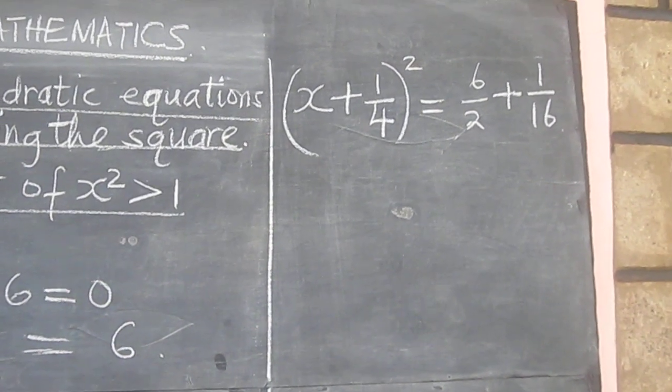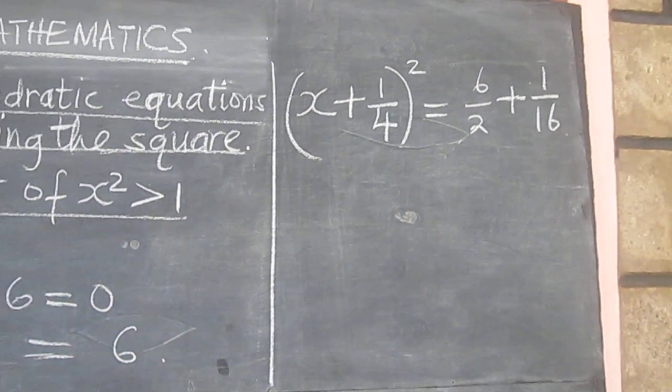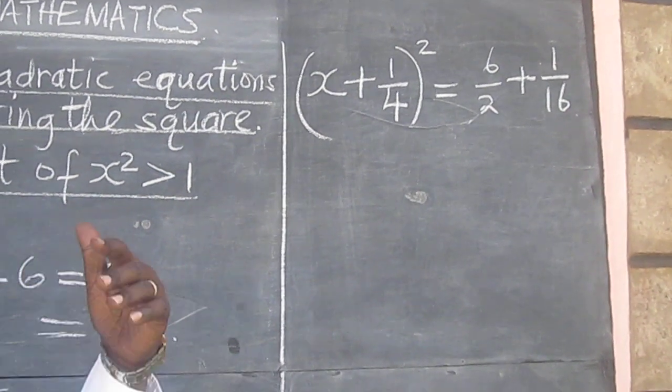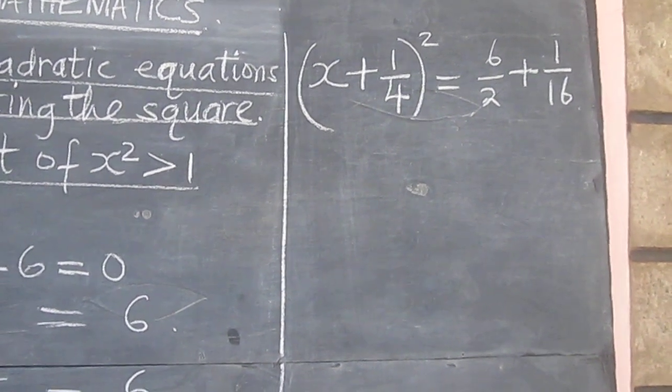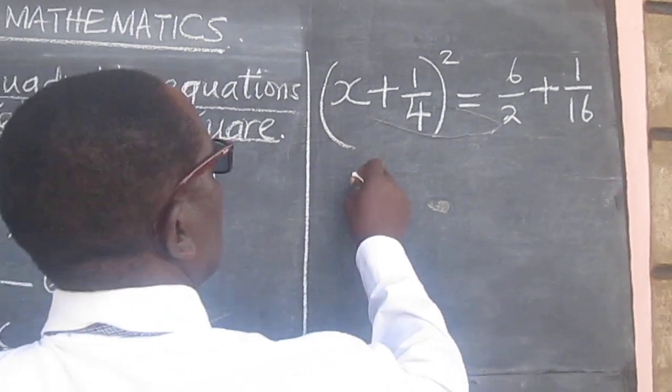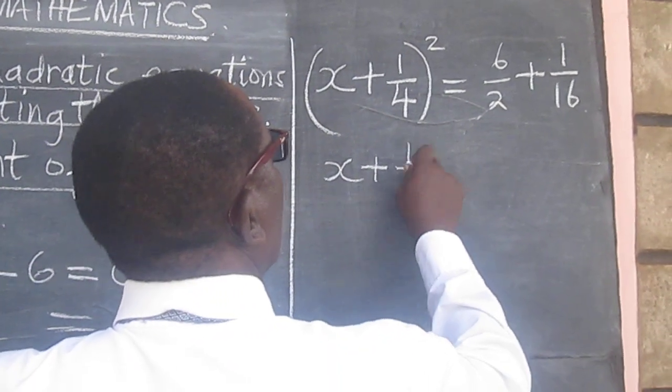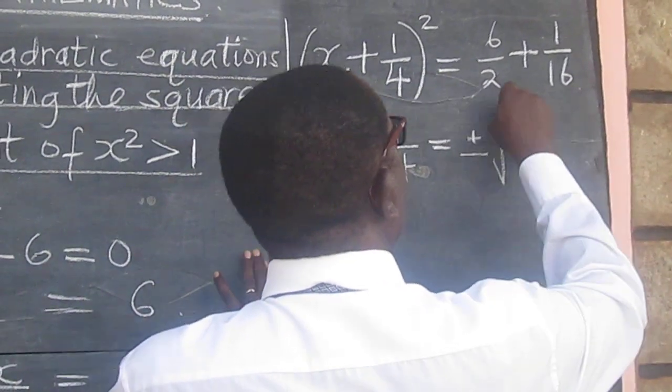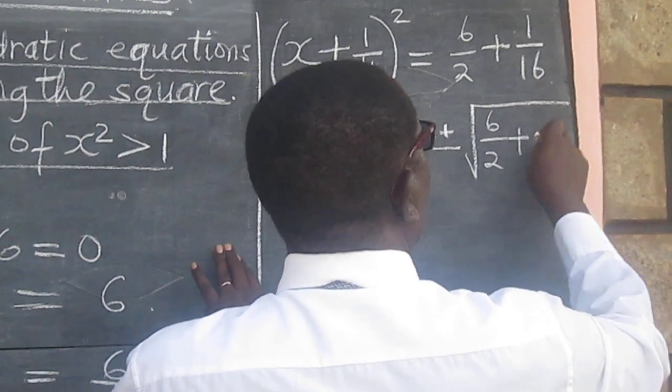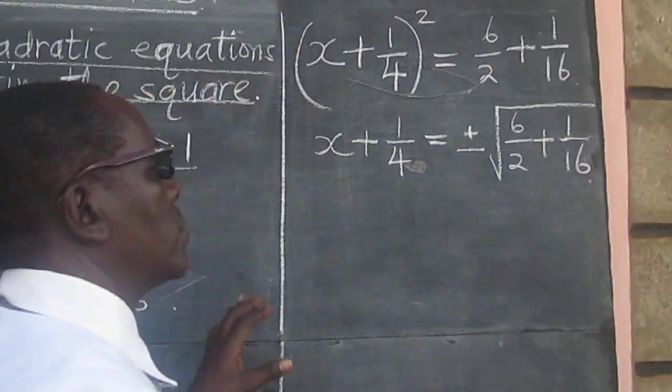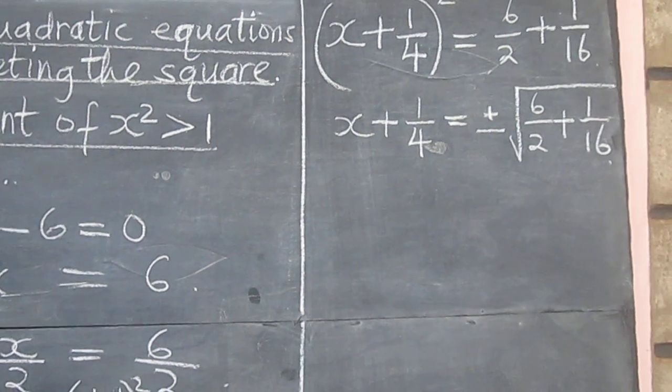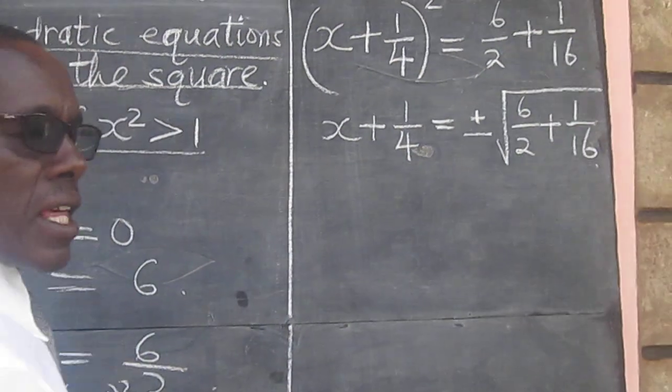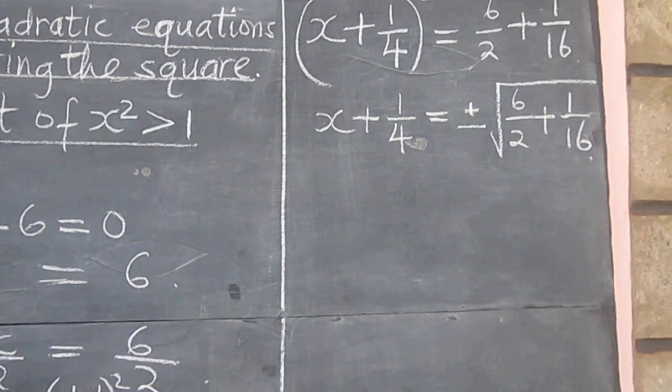The next step is to get the square root on both sides. And remember we said the square root of a number is either positive or negative. There are two possibilities. The next step is to move a quarter to the other side so that we remain with x only on this side, the unknown.